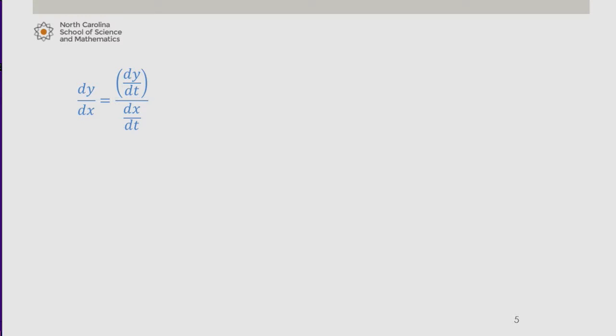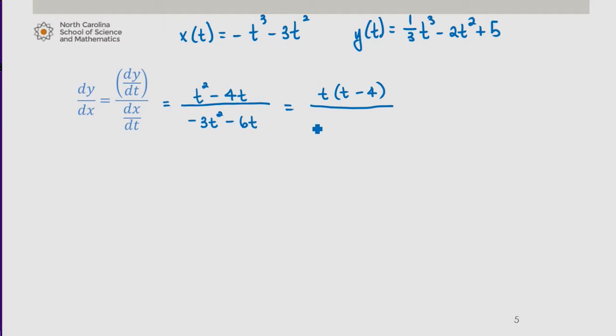Since x(t) was -t³ - 3t², dx/dt is -3t² - 6t, and that's our denominator. Y(t) was (1/3)t³ - 2t² + 5, so its derivative is t² - 4t. I'm going to factor the numerator and denominator into irreducible factors.